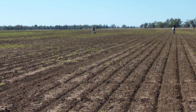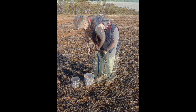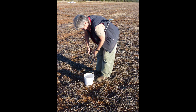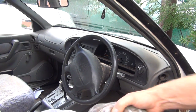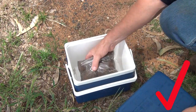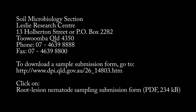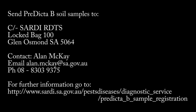To test a paddock for the presence of nematodes, it is important to follow recommended procedures. This includes taking a minimum number of soil samples from different locations in the paddock as well as at different soil depths. Handling and storage of the soil samples is also important for reliable results, avoiding high temperatures in particular. Soil samples may be sent to a testing laboratory at either the Leslie Research Centre at Toowoomba in Queensland or SARDI in Glen Osmond in South Australia. Details on sampling procedures are available at their websites.